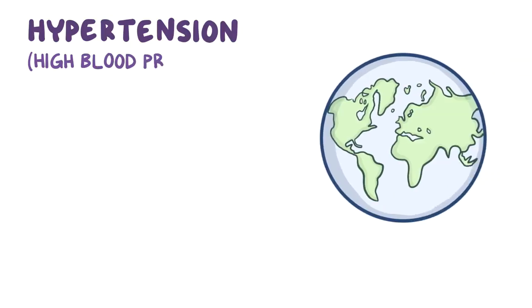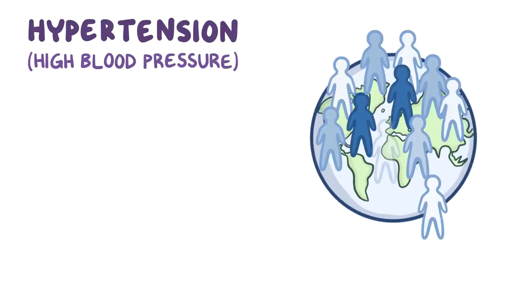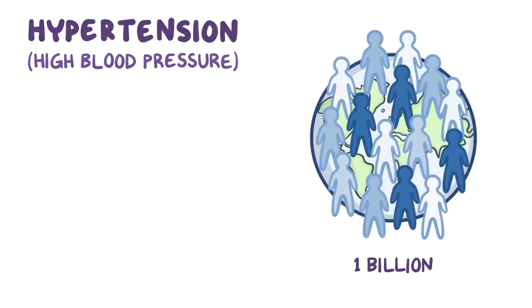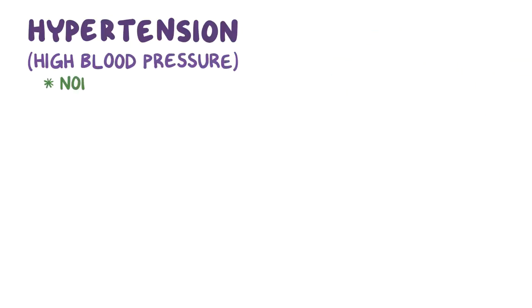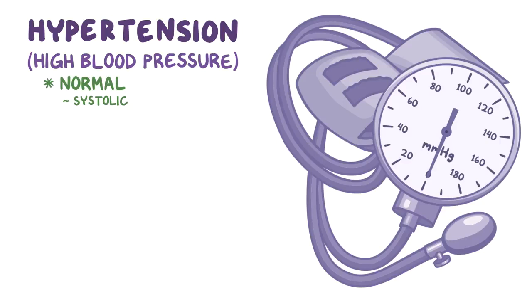Hypertension, or high blood pressure, affects over a billion people around the world. Normal systolic blood pressure is defined as less than 120 mmHg, and normal diastolic pressure is less than 80 mmHg.